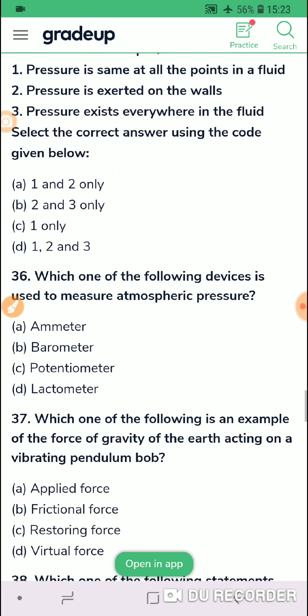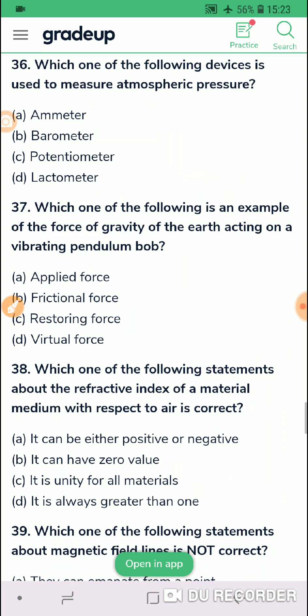Then further, it is asked in question 36, which one of the devices is used to measure atmospheric pressure? Atmospheric pressure is barometer. Then which of one of the following is an example of the force of gravity of the earth acting on a vibrating pendulum bob. So for a pendulum bob, the mg or a component of mg, you already know that it acts as a restoring force which helps it in oscillation.